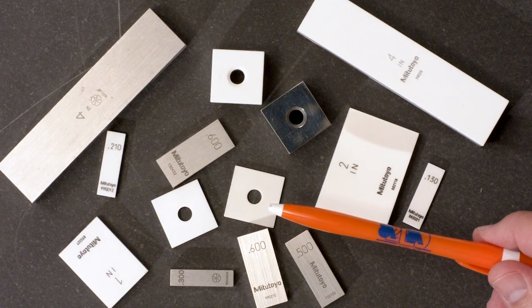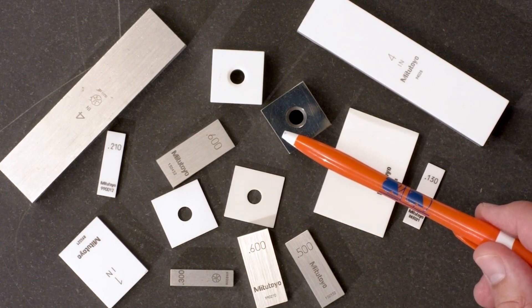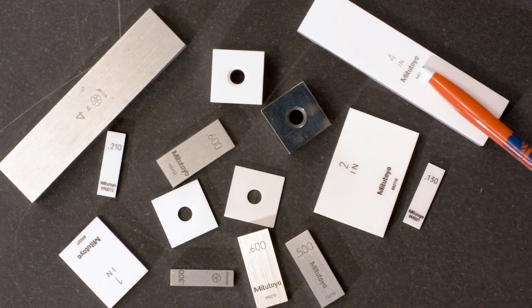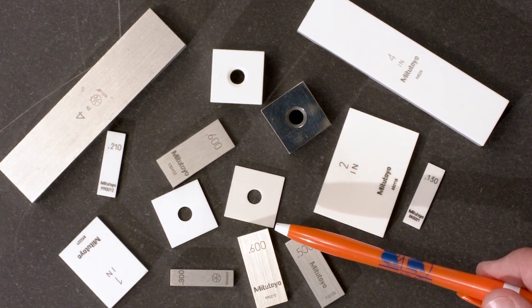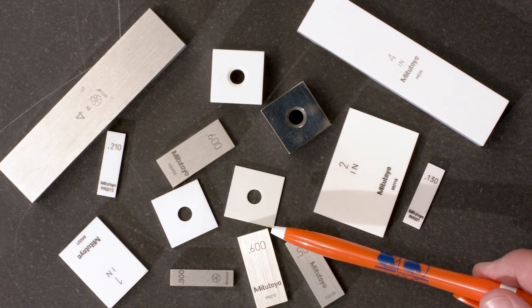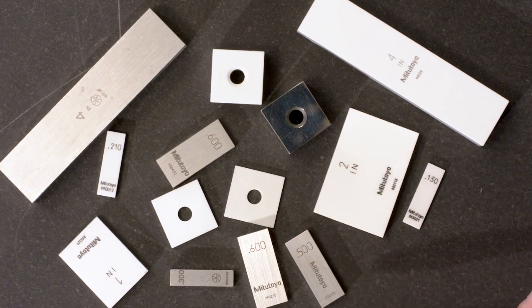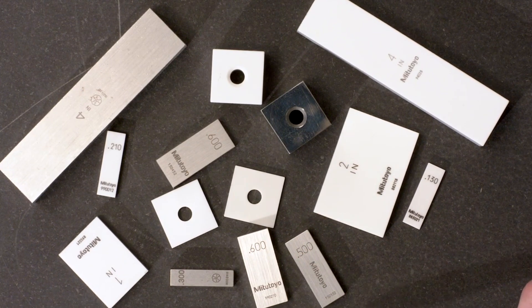Modern Gauge Blocks come rectangular or square in inch or millimeter sizes. The typical set includes lengths up to 4 inches, but you can get long block sets up to 20 inches. And you can special order Gauge Blocks up to 40 inches or 1 meter long.